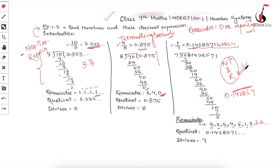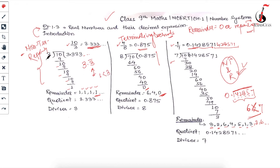After this there is a very interesting fact: the numbers present in the repetition string - the string which keeps repeating - are always less than the divisor. So if I count the numbers here: 1, 2, 3, 4, 5, 6 - there are 6 numbers, and the divisor is 7, so 6 is always less than 7. In the other case, the repeating string has only one number which is 3, and 1 is less than 3, which was the divisor. This observation you will have to note down.